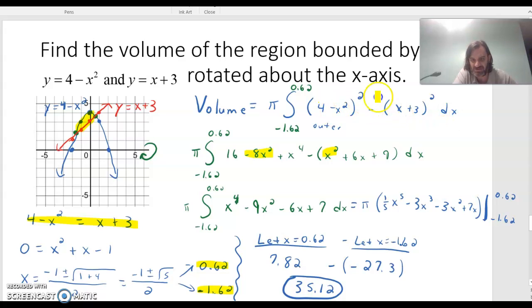So we'll foil out those two squared radiuses and collect like terms. And when we collect like terms, we get x to the fourth minus 9x squared minus 6x plus 7. So when I integrate that, and remember I've got the pi out front, I'll have pi times 1 fifth x to the fifth minus 3x cubed minus 3x squared plus 7x. And that's going to be evaluated from negative 1.62 to 0.62.